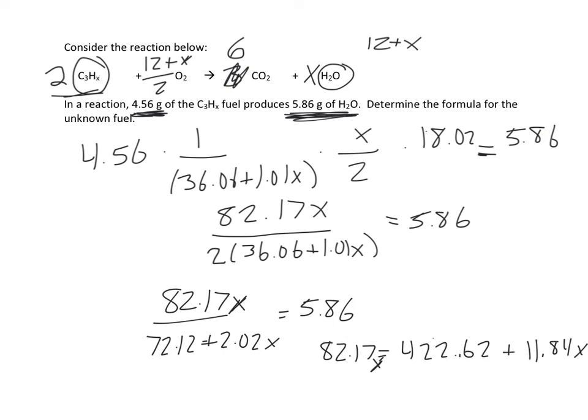And I actually forgot to put an X here if that was in the numerator. So I simplify this equation. 82.17X equals 422.62 plus all this. So I'm not going to do all this algebra for you, but when you're done, you should be able to solve for X and find that X equals 6.